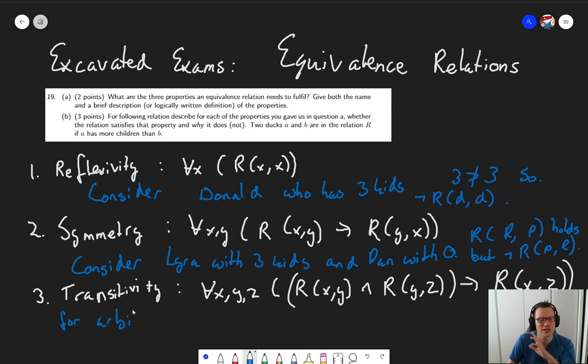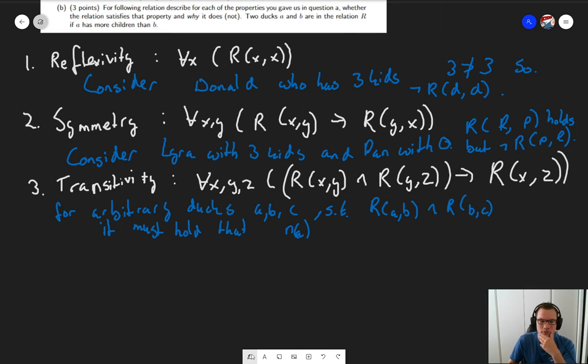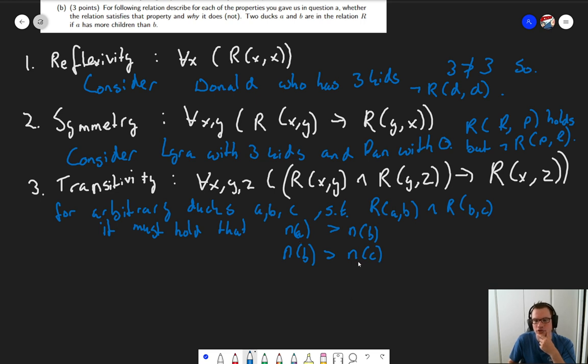And the explanation we can give is something like this. For arbitrary, you notice that I do like to use some words that we often see in a proof. So, for arbitrary ducks a, b, c such that (a,b) is in the relationship and (b,c) is in the relationship, it must hold that the number of kids from a, let's call it, let's make it a function n. And let me also move this down so you can actually read it. The number of kids of a must be more than the number of kids of b. And similarly, the number of kids of b must be bigger than the number of kids of c. So the number of kids of a must be bigger than the number of kids of c. Why? Well, because the greater than relation is transitive.